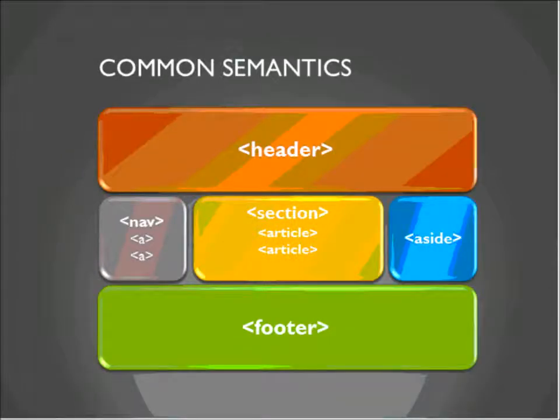This is a common breakdown of the semantic elements. It doesn't imply anything about layout — it's talking about the intent of the objects. We have a header at the top, a footer at the bottom, a navigation section with nav and anchor links that could link out to different pages or sections of your site. The nav doesn't have to be on the left-hand side — it can be at the top or anywhere you want.